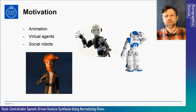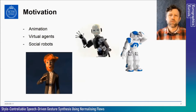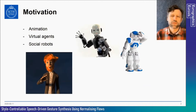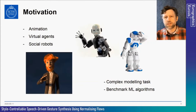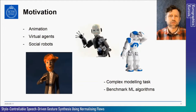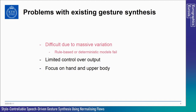We have two main motivations for this work. First, generating believable natural-looking gesticulation is an unsolved problem with high impact in domains such as animation, virtual agents and social robots. Second, modeling gestures is a highly complex task and a good benchmark for developing advanced machine learning models. One major problem comes from the massive variation in how people gesture — ask someone to say the same thing twice and they will gesture differently.